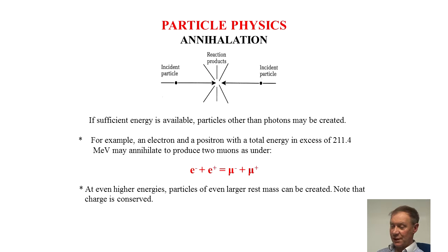In the case of annihilation, sufficient energy must be available for particles other than photons to be created. For example, an electron and positron with sufficient energy in excess of 211.4 mega electron volts may annihilate to produce two muons.